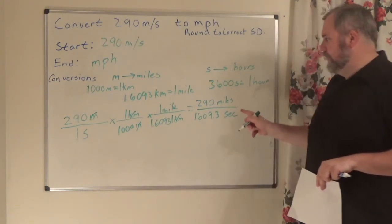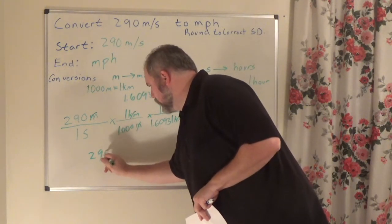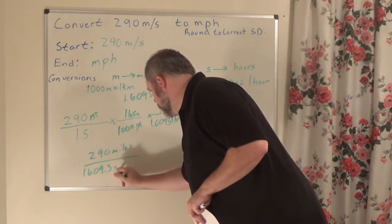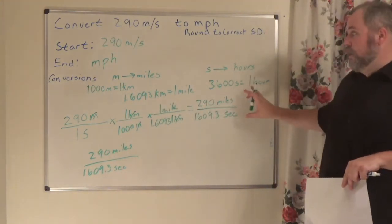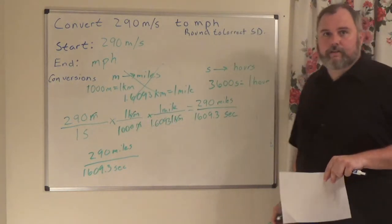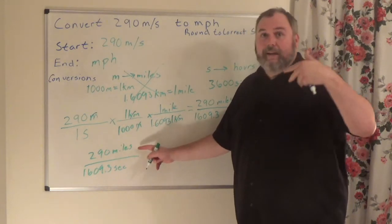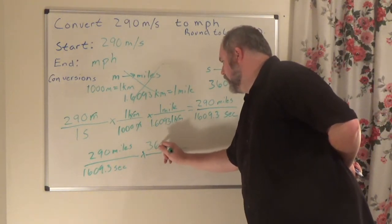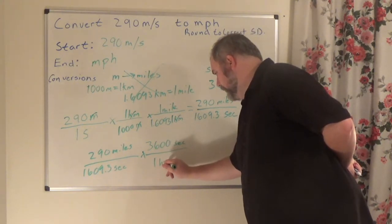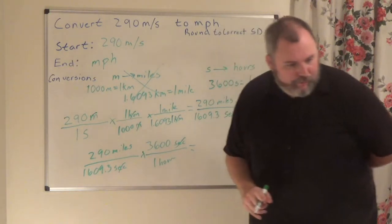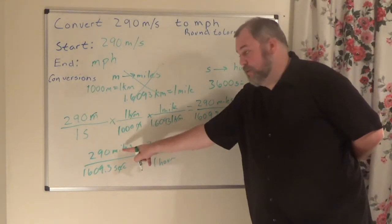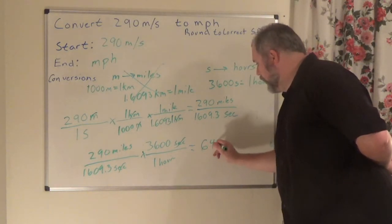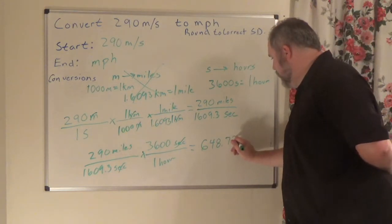The meters-to-miles section is complete. I like miles where it is, but I don't like seconds. Using the seconds-to-hours conversion factor: 3,600 seconds is one hour. Seconds cancel out. Multiplying 290 times 3,600 divided by 1,609.3 gives 648.729...